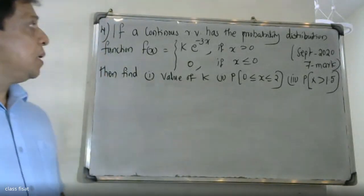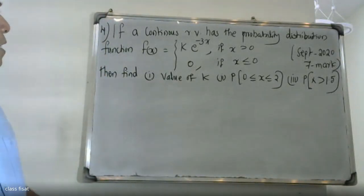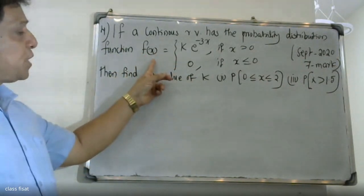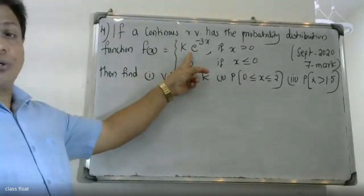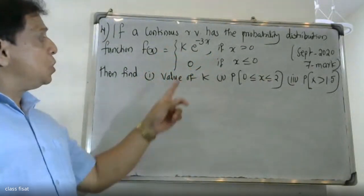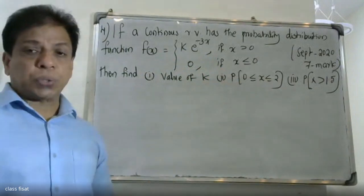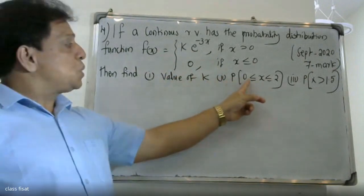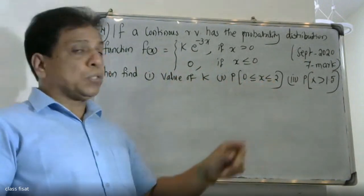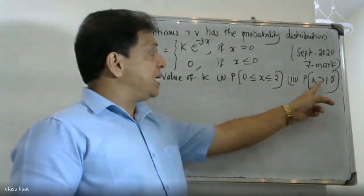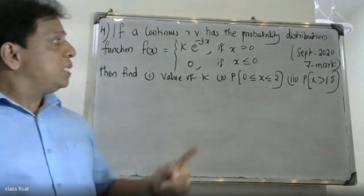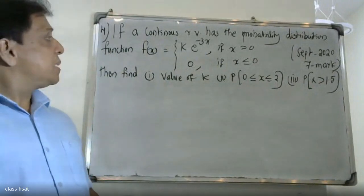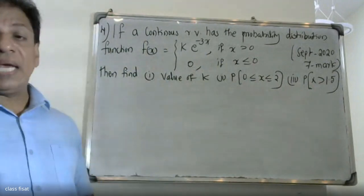Good morning students. The question: if a continuous random variable has the probability density function f(x) equal to k·e^(−3x) if x > 0, and 0 if x ≤ 0, then find the value of k, the probability of 0 < x ≤ 2, and the probability of x > 1.5. This is a 7-mark question.